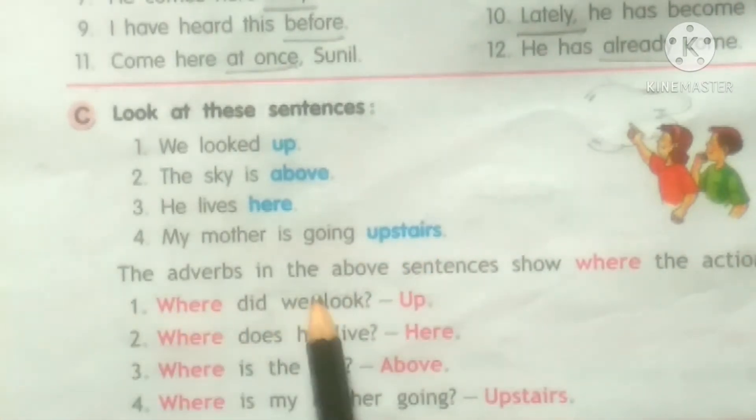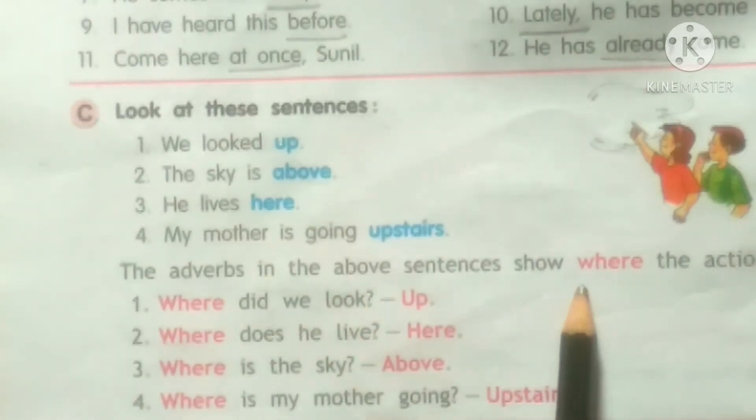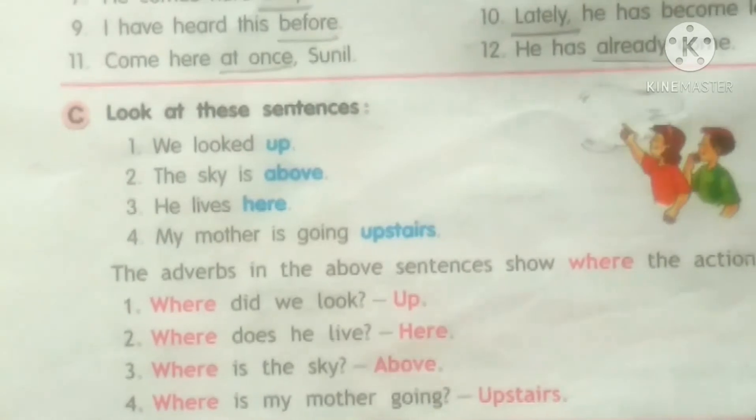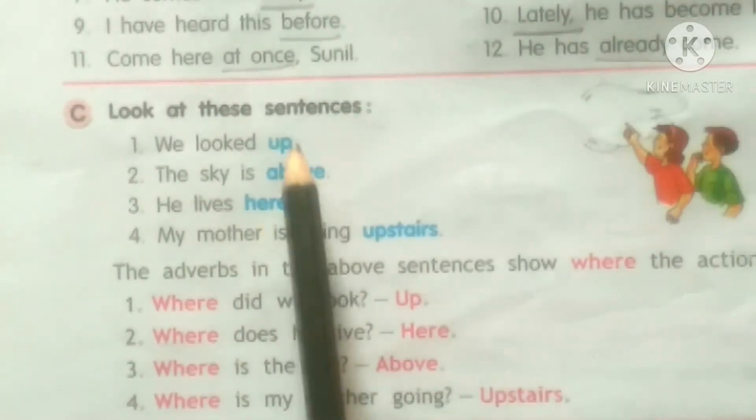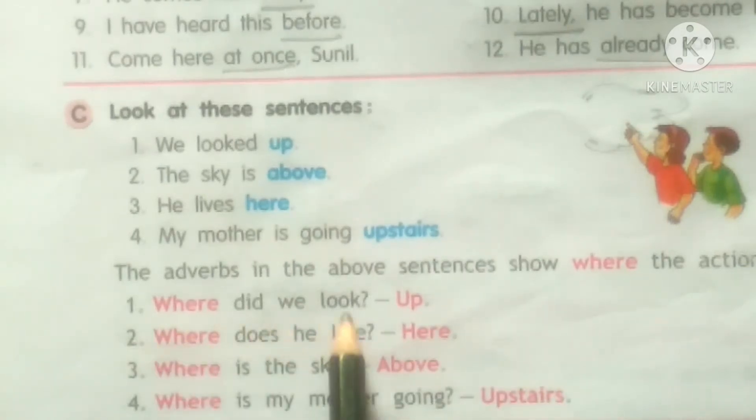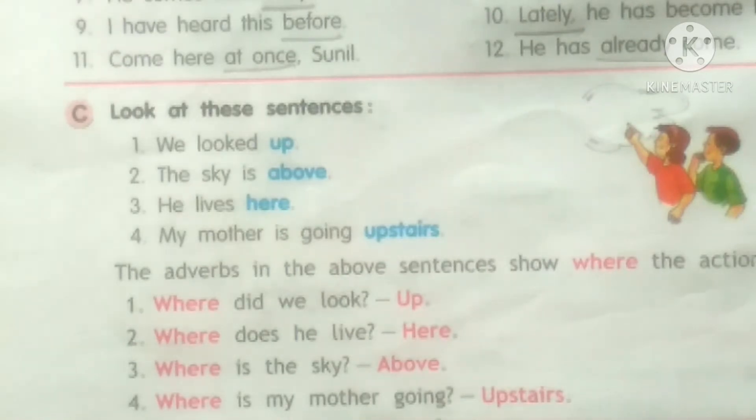The adverbs in the above sentences show where the action is done. You have to remember: up, above, here, upstairs. Where did we look? Up. Where does he live? Here. Where is the sky? Above. And where is my mother going? She is going upstairs.